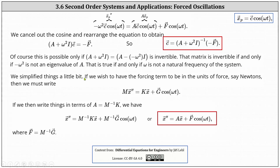If we wish to have the forcing term in units of force, such as Newtons, we write the system as M times X double prime equals K times X plus G times cosine of omega t. Multiplying through by M inverse gives X double prime equals M inverse times K times X plus M inverse times G times cosine of omega t. Letting A equal M inverse times K, we have X double prime equals A times X plus F times cosine of omega t, where F equals M inverse times G.